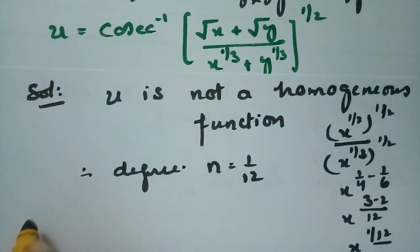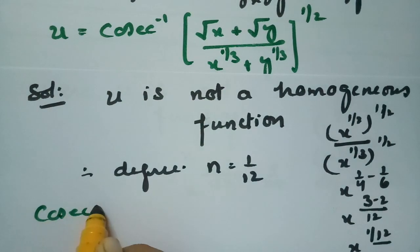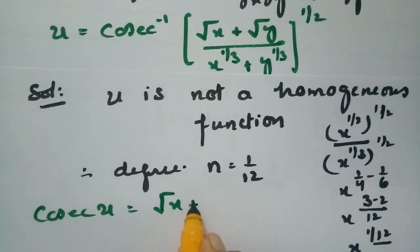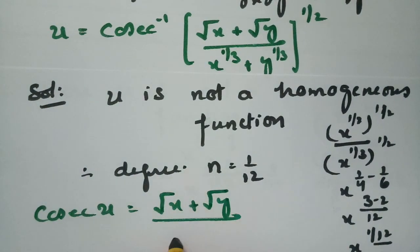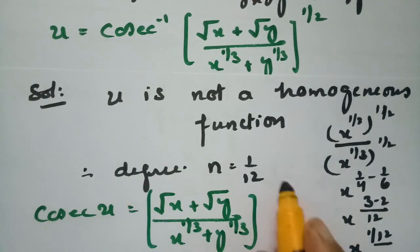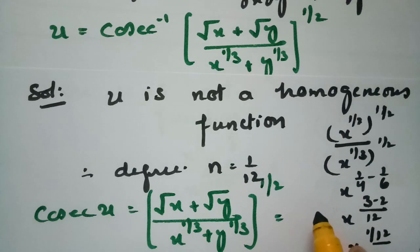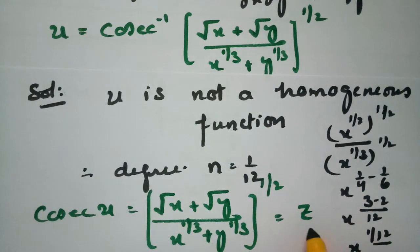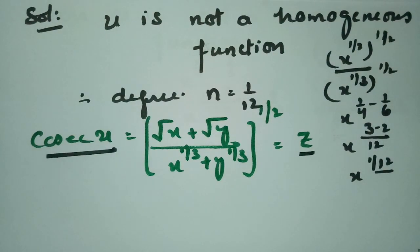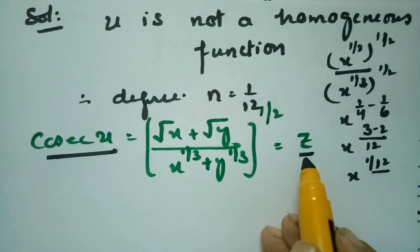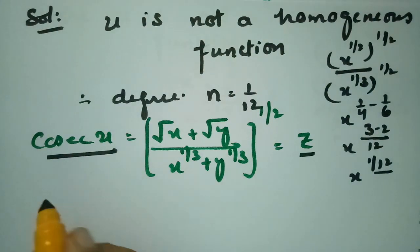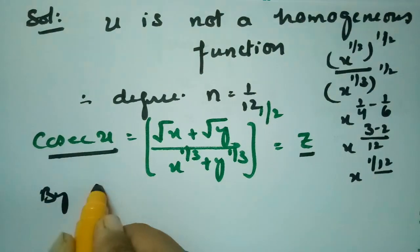As u is not a homogeneous function, I am bringing cosec⁻¹ to the other side. So cosec(u) = (√x + √y) / (x^(1/3) + y^(1/3))^(1/2). I consider this as z. So z = cosec(u). z is a homogeneous function of x and y of degree 1/12, so by Euler's theorem we can proceed.